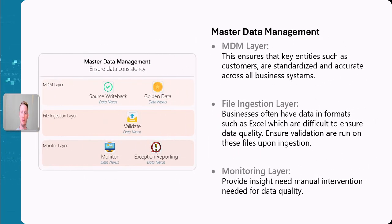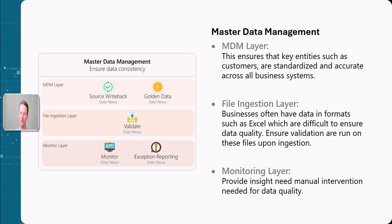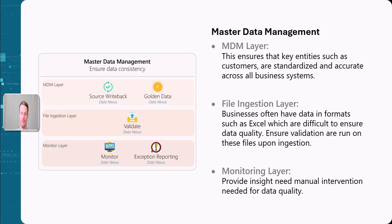One of the most important components is the master data management component. Within that we have the MDM layer, which looks at all the different data across your different sources. Often with different sources you'll have things named differently — for example, 'ABC Inc' in one source and 'ABC Company' in another. This causes a lot of issues with reporting. The MDM layer has this list of golden data, creating a single source of truth.